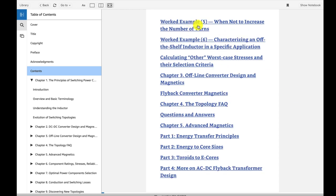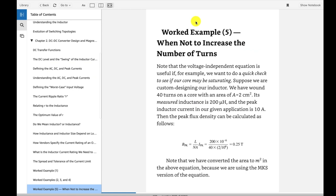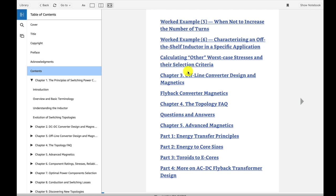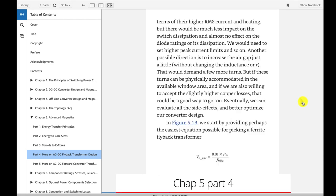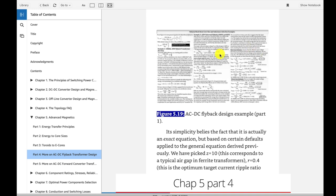Also in Chapter 2, he's got worked examples, and those are really nice. There's six different examples. I'll just jump into this Example 5: When Not to Increase the Number of Turns. This is a really interesting section here. Then in Chapter 3, he goes into the offline converter design magnetics, the flyback. He's really good at this stuff, so I recommend it just for this chapter alone. Here's an example, flyback transformer design.